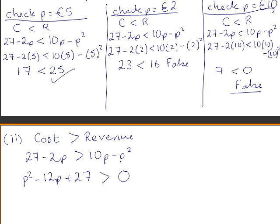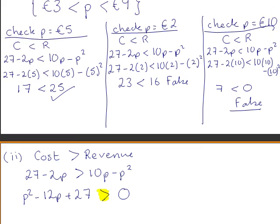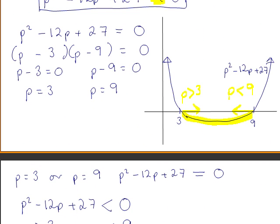The only difference here is that in part 1 our inequality symbol was less than, and now our inequality symbol is greater than. This corresponds to the part of the curve that is above the x-axis — that is, the sections on either side. We must give the values of p that correspond to these sections: p is greater than 9 or p is less than 3.